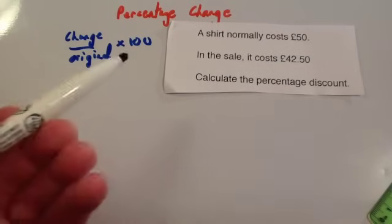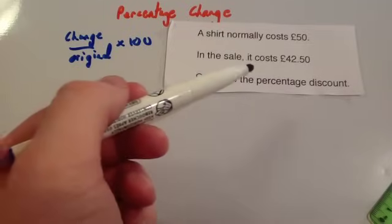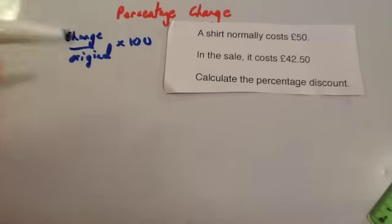Here's another question. A shirt normally costs 50 pounds. In the sale it costs 42 pounds 50. Calculate the percentage discount.